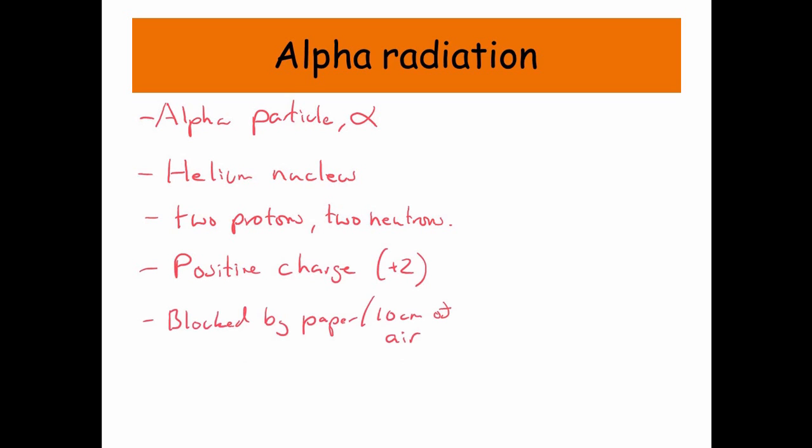It's blocked by paper or about 10 centimeters of air, and it is deflected in magnetic and electric fields. And here I've got the equation for what happens when a nucleus decays and releases an alpha particle.